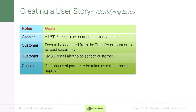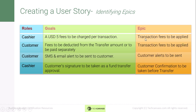So far we have our goals and roles mapping, giving us the information of what is needed by which user role. Now let's create epics for these roles. Epics are high-level statements about required functionality. The first epic, covering both fee-related goals, is 'Transaction fees to be applied.' For the alert goal, the epic is 'Customer alerts to be sent.' And for the signature goal, the epic is 'Customer confirmation to be taken before transfer.'